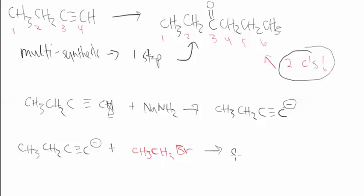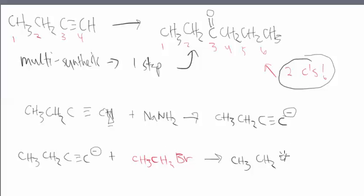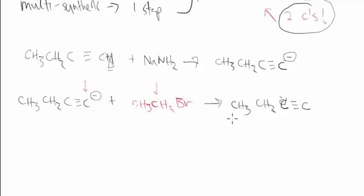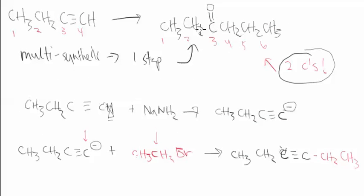If I rewrite, CH3 CH2 carbon C triple bond C, now this carbon that has the negative charge on it hooks up with this carbon that's attached to our halogen. When that happens we end up with CH2 and CH3. So now we've got one, two, three, four, five, six carbons in total, and that's what we need with our product from above.